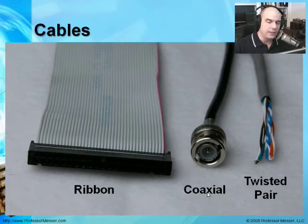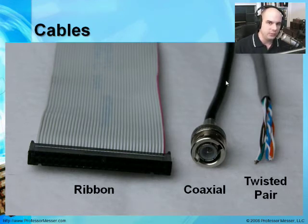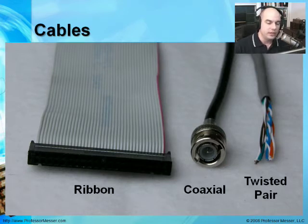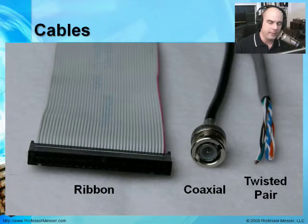Another cable type is a coaxial cable, or coax cable. This coax cable consists of a very small piece of copper in the middle, usually wrapped in a dielectric and with some shielding around it, so it's very strong and can wrap around corners. You see it used in cable television and buried in the ground outside because it's very sturdy and durable.